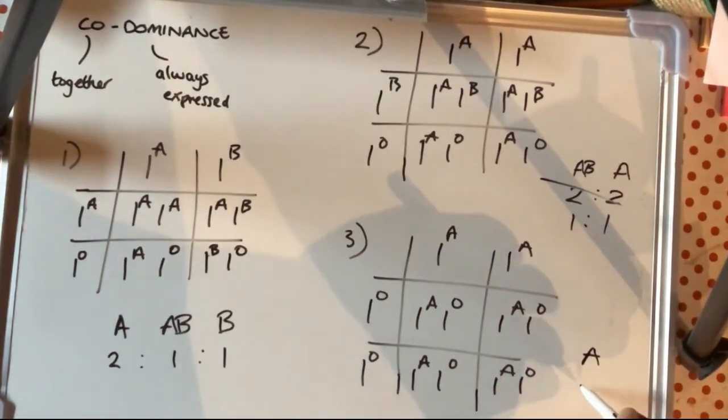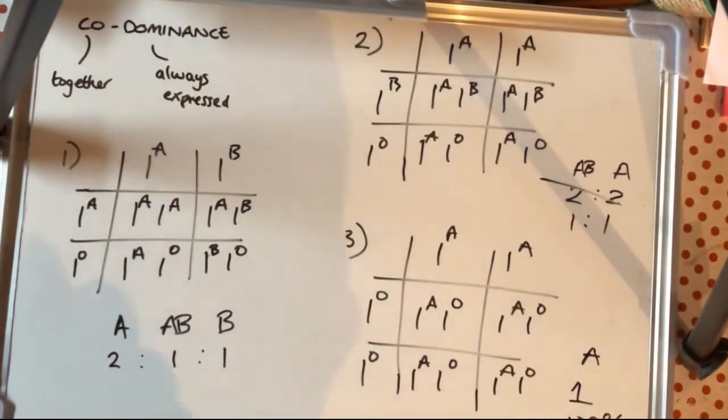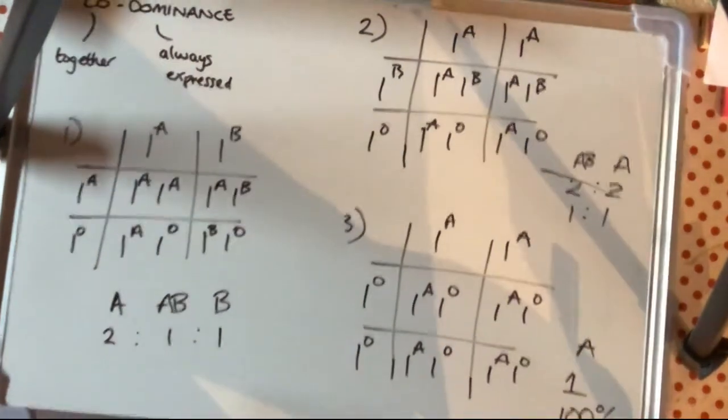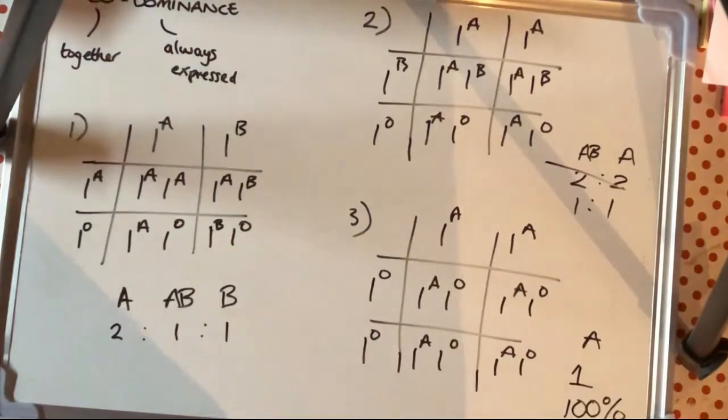Whereas in our third one, we've got AA for one parent and OO for another parent. So that should tell you that all of the offspring should be AO, meaning all of the offspring should have blood type A. 100% would be the probability.